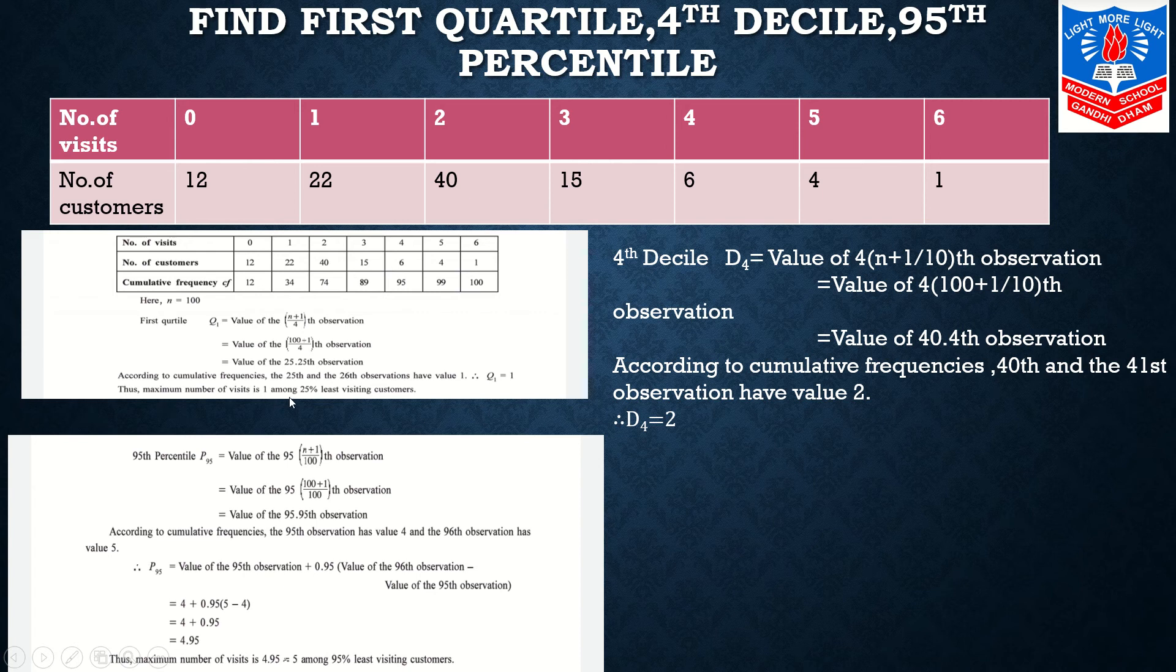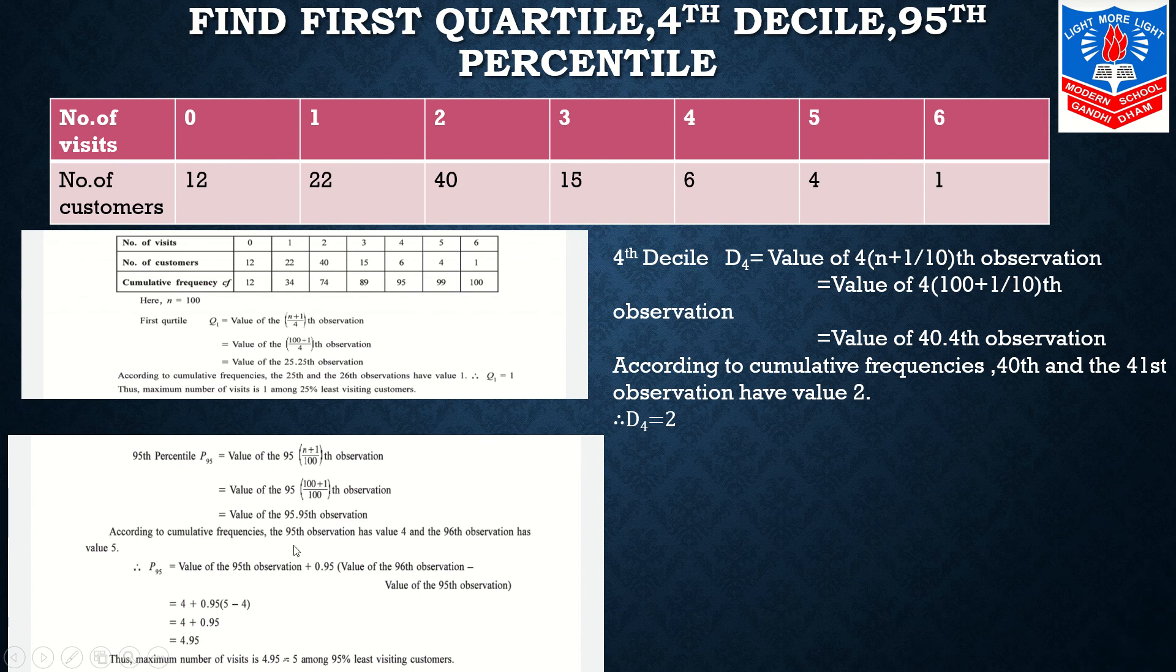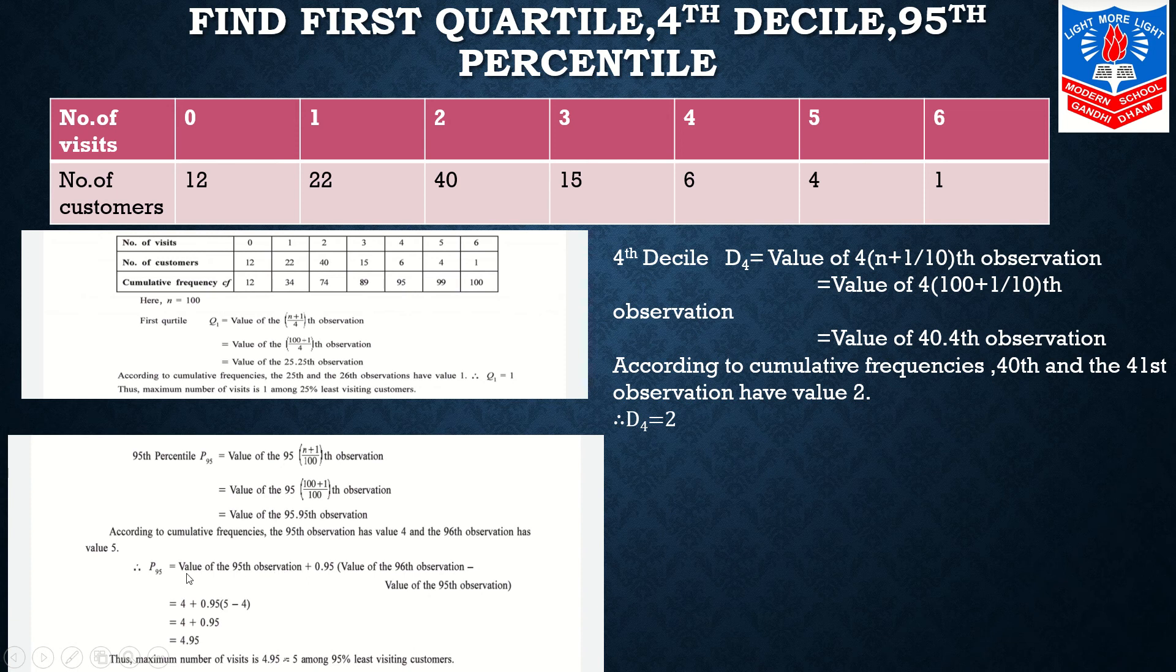Thus maximum number of visits is 1 among 25 percent least visiting customers. Now I move on to P95. The calculation will go: 95(N+1)/100. If you make the calculations with N as 100, you will get 95.95th observation. According to cumulative frequencies, the 95th observation has value 4 and 96th observation has value 5. Therefore P95 equals to 4 + 0.95(5 - 4), which gives 4.95.